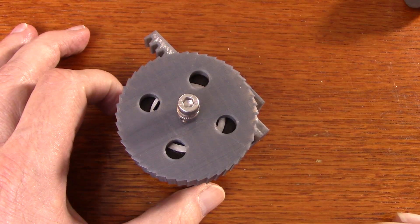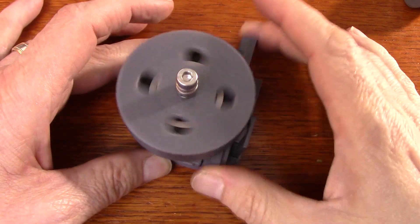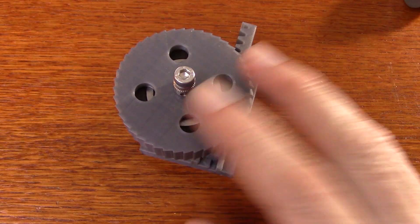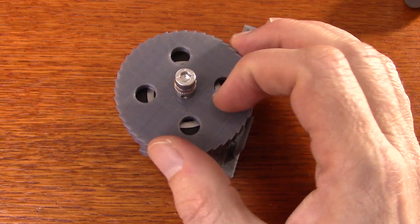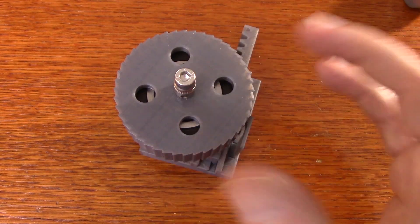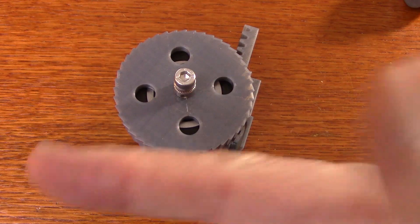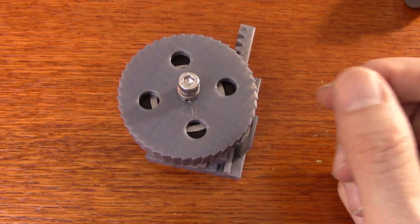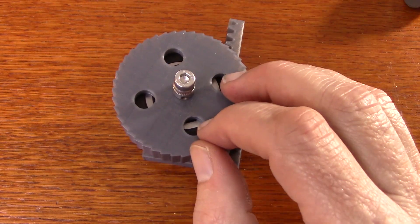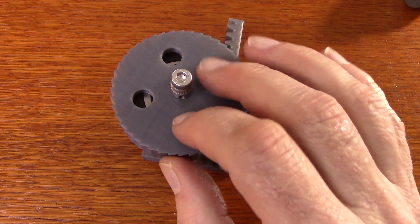So this proved to be much more useful and this is an example of why it's sometimes helpful to build part of the mechanism and then think about it before continuing the design. Because if I had continued the design with what I had before, I probably would have finished it and it would have been a lot more complicated than what I have here.